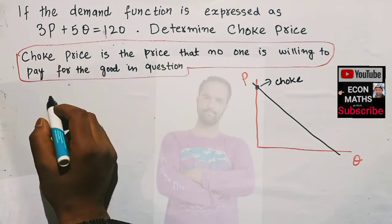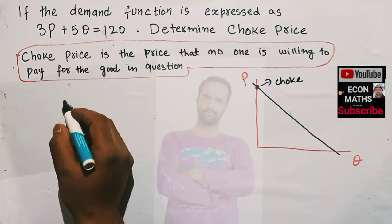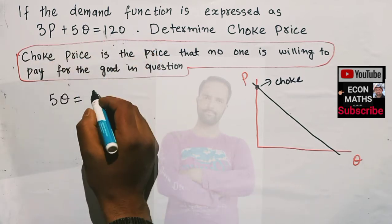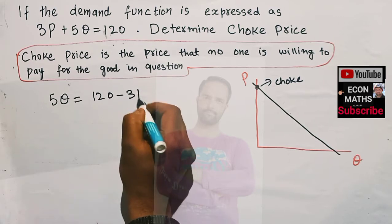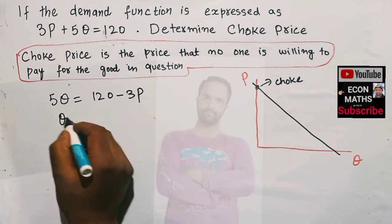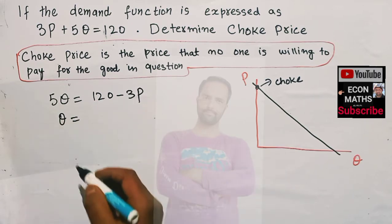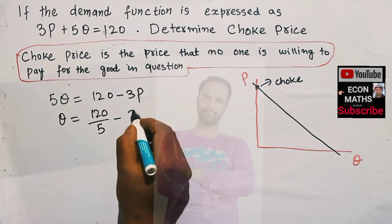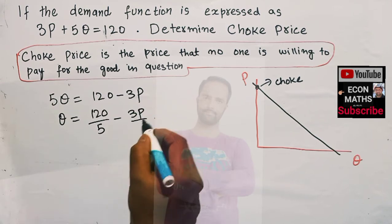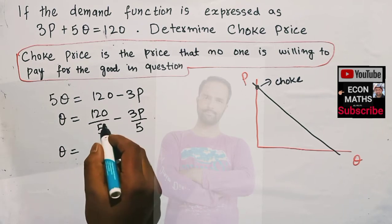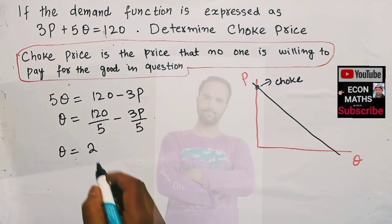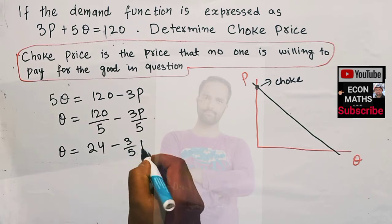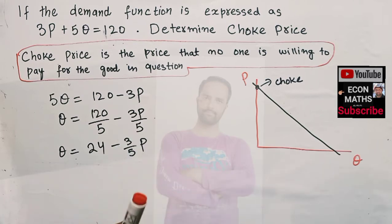Let us rewrite the demand function and solve for Q. We have 5Q equals 120 minus 3P, then Q equals 120 over 5 minus 3P over 5, which gives us Q equals 24 minus 3/5 P.